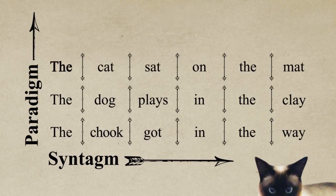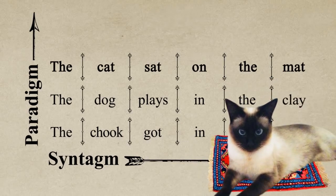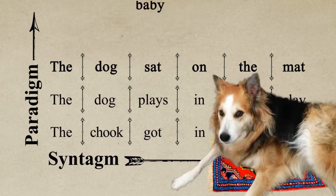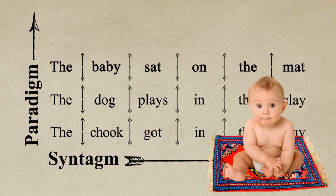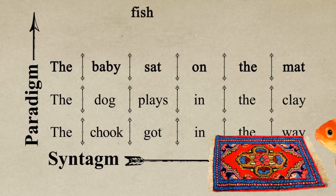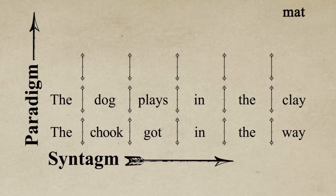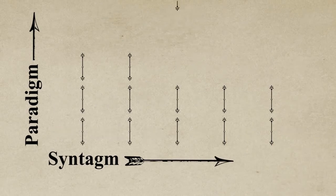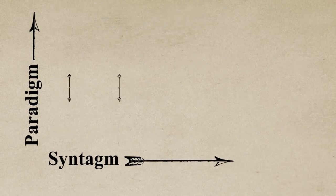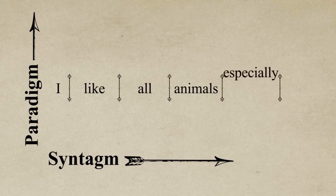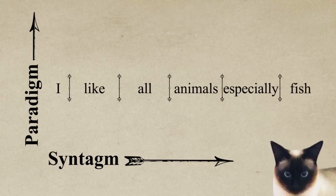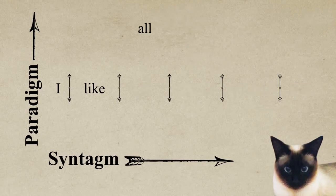The paradigm refers to a group of linguistic objects which have similarities and that can replace one another in the syntagm. Take the earlier syntagm, 'the cat sat on the mat.' You can replace 'cat' with 'dog' or 'baby.' But in this particular syntagm, you can't use a word like 'fish' — fish just can't sit. But in a different syntagm they could be used to replace 'cat,' for example, 'I like all animals, especially fish.' So just because some objects have a paradigmatic relationship in one specific syntagm doesn't mean that it holds in all contexts.